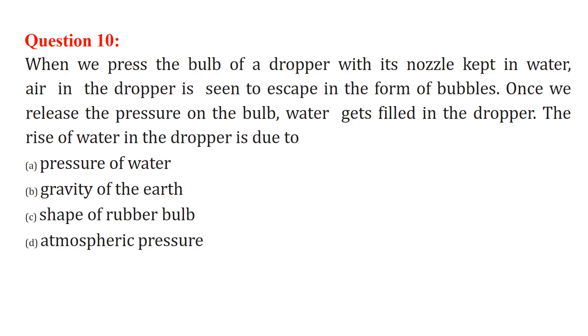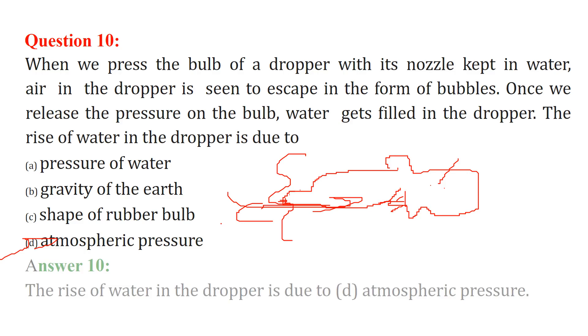When we press the bulb of a dropper with its nozzle, so if this is a dropper, when you press this inside of water some bubbles will come out. When you release it, the water will come inside. So what is the scenario? Why is this water coming inside? This is because of the atmospheric pressure. The rise of the water in the dropper is due to atmospheric pressure.